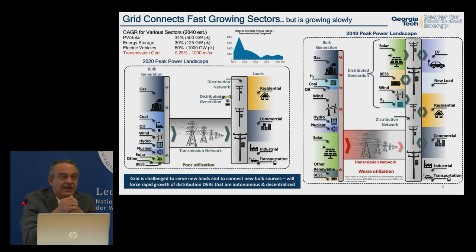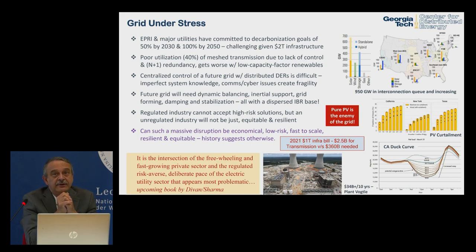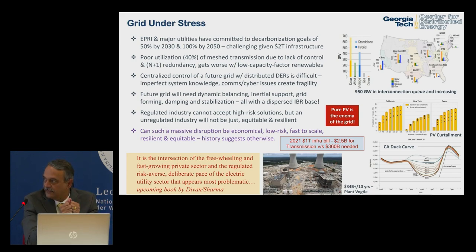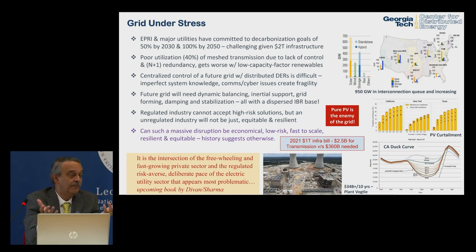EPRI and utilities are committed to 50% decarbonization by 2030 and 100% by 2050 — but I don't see a pathway to getting there. The one-trillion-dollar infrastructure bill had two and a half billion dollars for transmission. We need about 360 billion. That's a big shortfall. And NIMBY concerns mean you won't be able to build all that transmission easily. Pure PV, as currently deployed, is the enemy of the grid — generating where and when it wants, not where energy is needed.